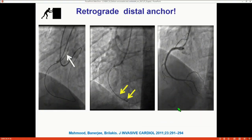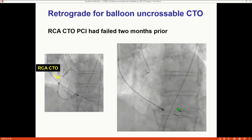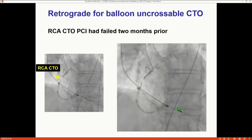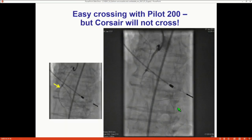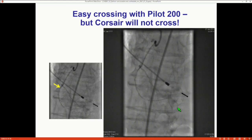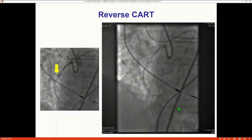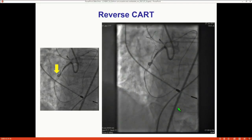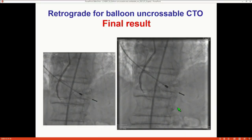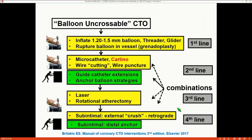Another option is to go retrograde and use it for anchoring or modifying the lesion. This is an example of a CTO where the wire went through but the balloon did not — we did a reverse CART, modified the lesion, and were eventually successful in this very small diffusely diseased vessel. Having this algorithm in mind is very useful — and it's not for CTOs only, but for any lesion where you cannot get the balloon through after the guidewire passes. It helps you move through the steps faster and achieve success quicker.